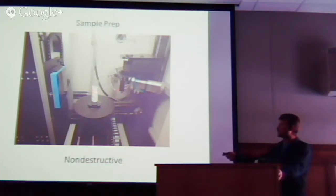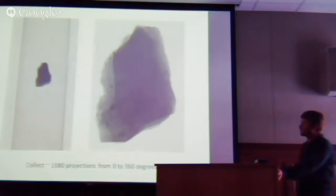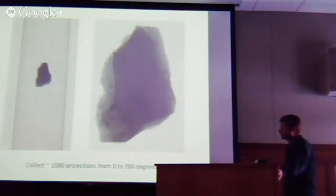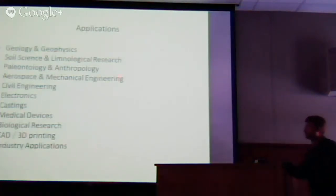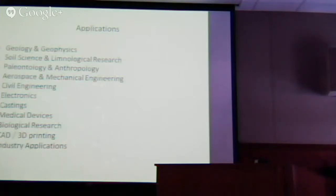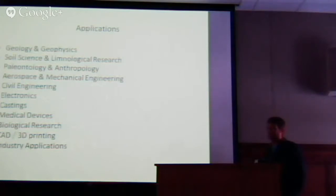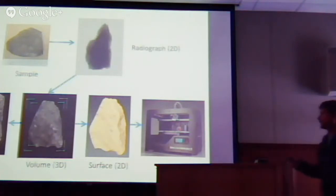We spin the sample 360 degrees and take about 1,000 exposures, then use a computer algorithm to reconstruct that into a 3D volume. We do a lot of paleontology and anthropology work, mechanical engineering, and electronics. Several industries in town come to use our CT, including 3M, when they need to scan larger items at higher power. The data can be sliced at any angle for inspection or surfaced — and once you have that surface mesh, you can send it to a printer.